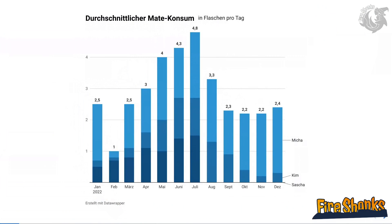I've shown you a picture of a graph with the title 'Average Market Consumption.' We have the months from January to December 2022 on the x-axis, and on the y-axis the average consumption of water per day — bottles per day. The data is compiled from three people.